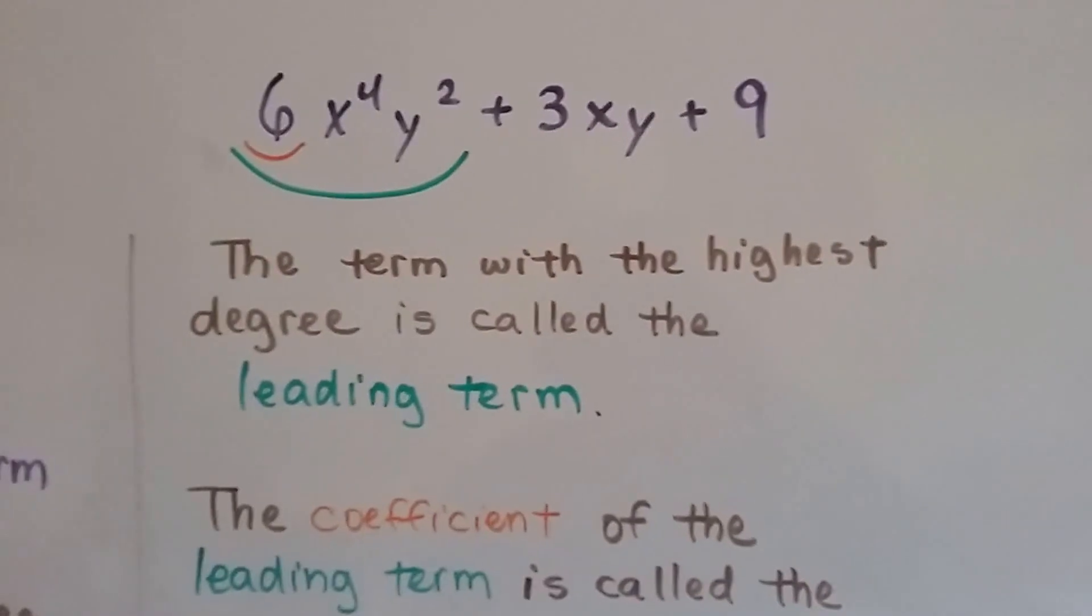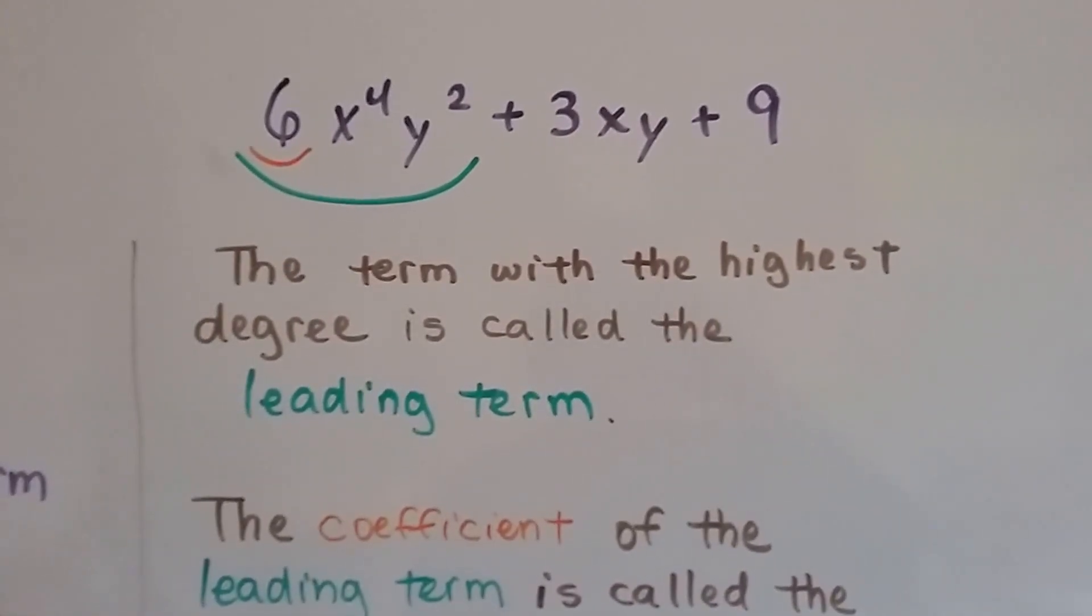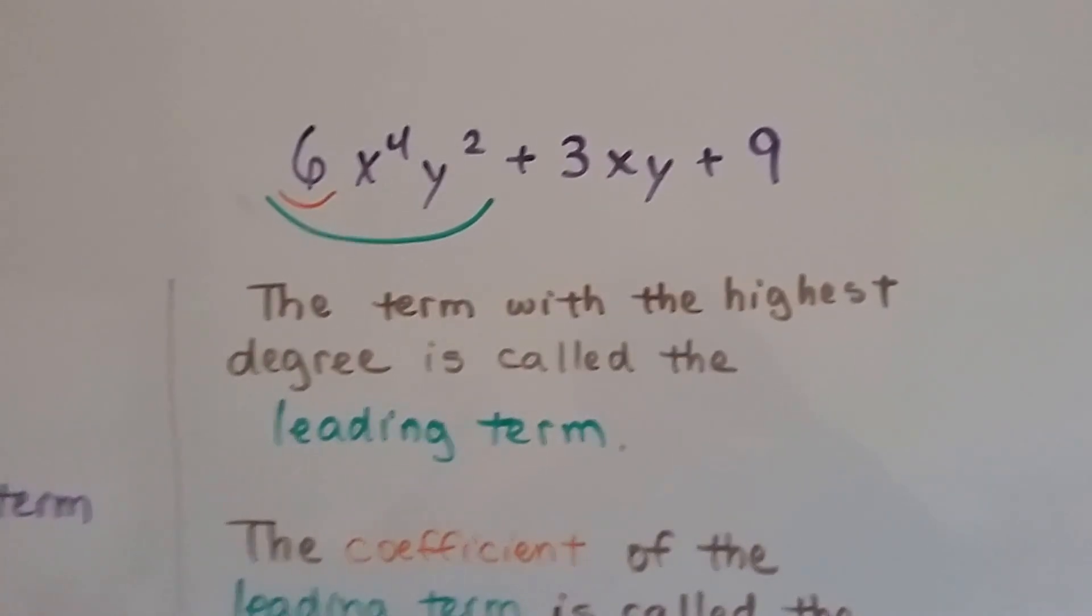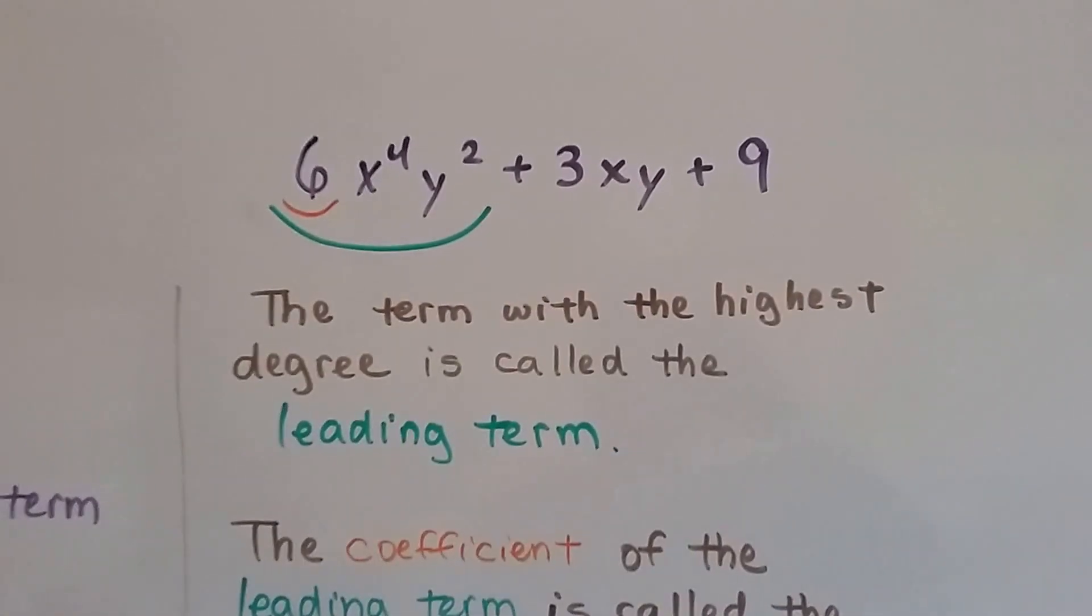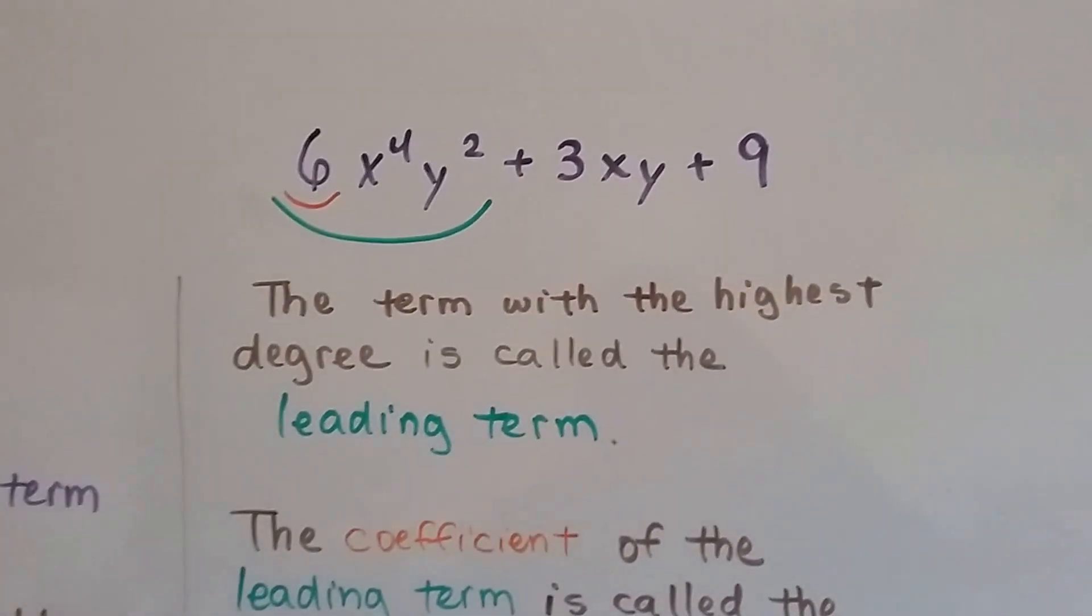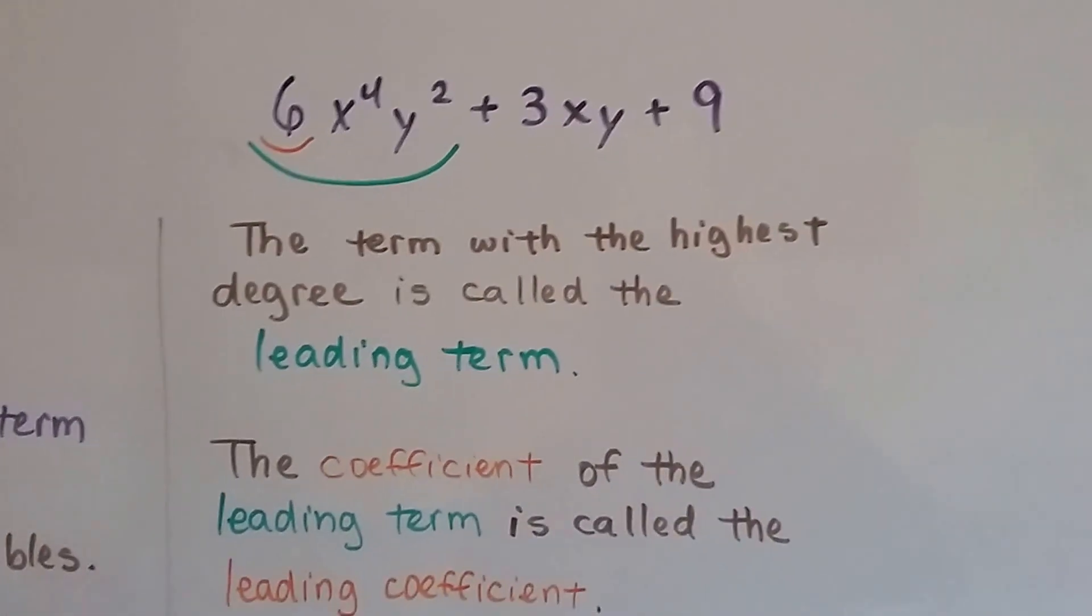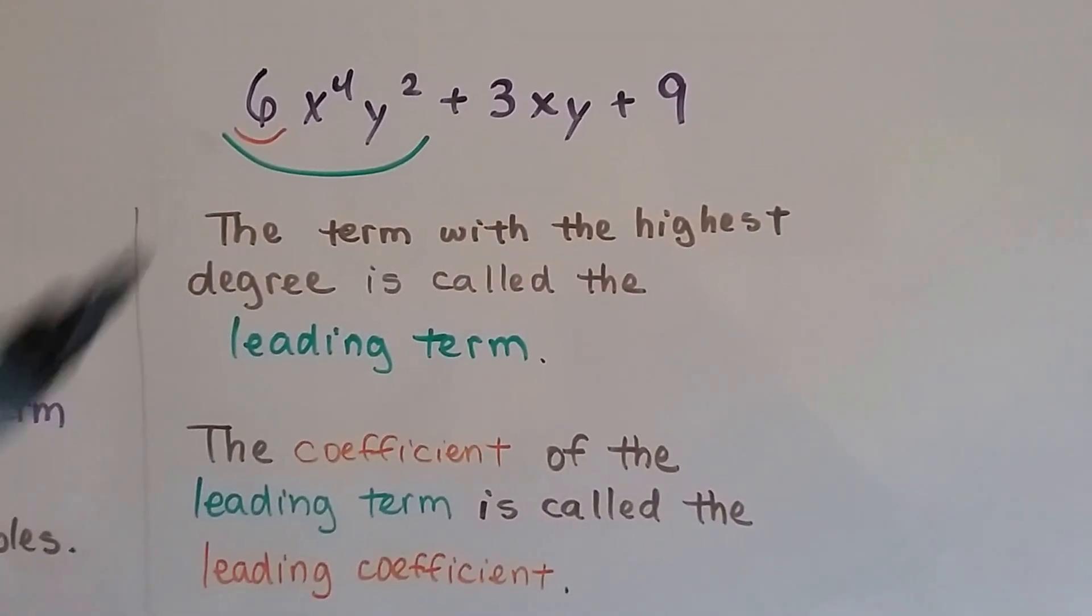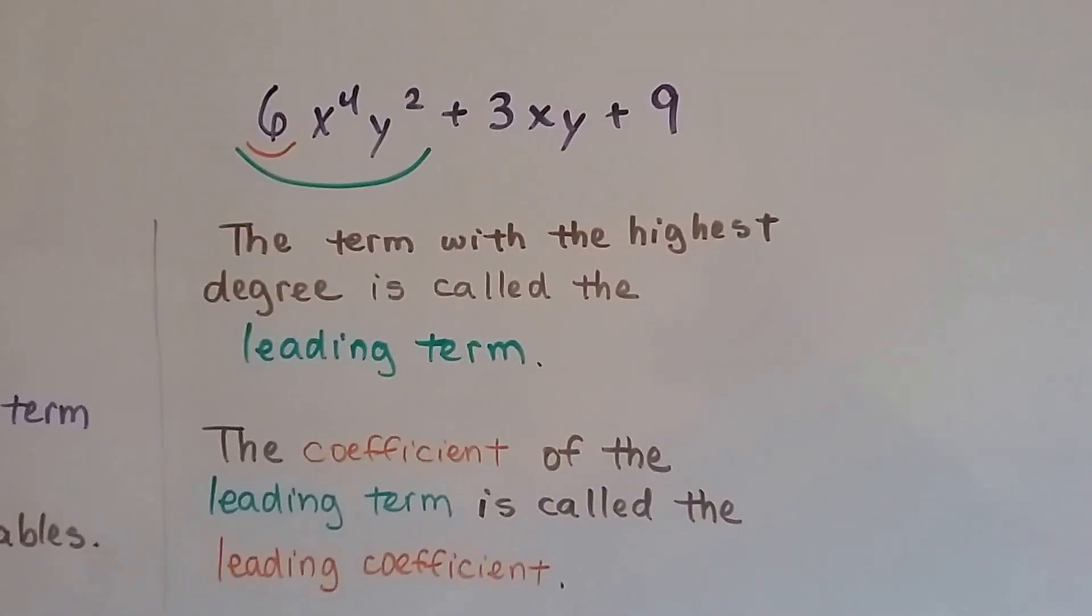In the same polynomial that we've been working with, the term with the highest degree is called the leading term. So because this has got a 6, and that's only got a 2, and that's got a 0, this term is the leading term. And the coefficient of the leading term is called the leading coefficient, right there. I hope you're taking notes.